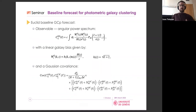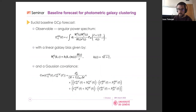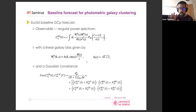For the observable we used the angular power spectrum, computed by convolving the non-linear matter power spectrum with window functions. The window functions for galaxy clustering are the galaxy bias times the number density distribution. We assumed a fiducial bias given by √(1+z) evaluated at the mean redshift of each tomographic bin, and a Gaussian covariance. These were the baseline assumptions for the first official consortium results.